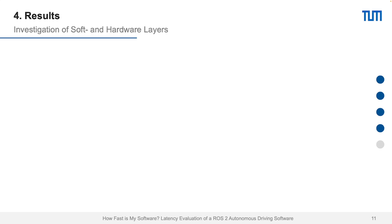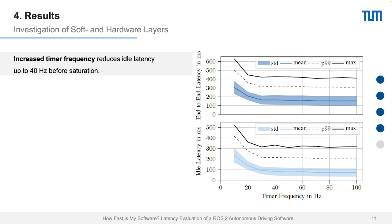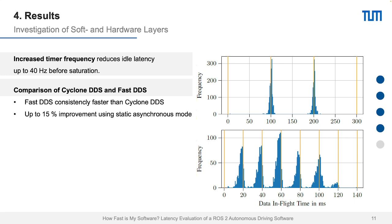We investigated software and hardware layers for optimization. First, we increased the timer frequency to reduce idle latency up to 40 Hz before saturation, and showed that increasing timer frequency up to 40 Hz can reduce idle latency. Second, we compared two different middleware implementations — Cyclone DDS and Fast DDS — and showed that Fast DDS is consistently faster than Cyclone DDS, with up to 15% improvement using static asynchronous mode.